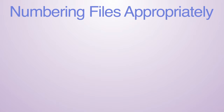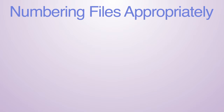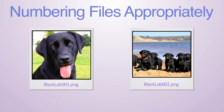Finally, another good practice when naming a series of files with numbers is to start with zeros if you anticipate having double digits. For example, blacklab01.jpg, blacklab02.jpg, etc. Following this system, you can start with two zeros if you foresee reaching triple digits. The number of digits you include is entirely up to you, but it is better to be safe than sorry.